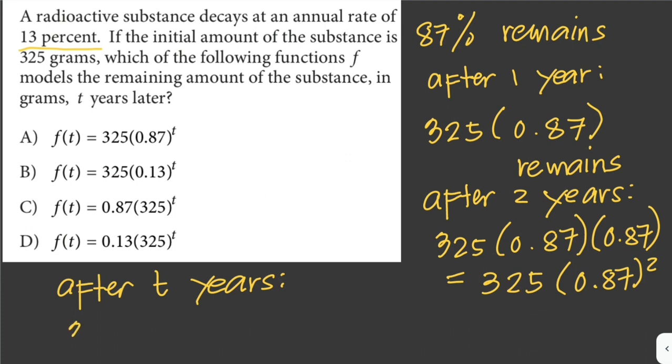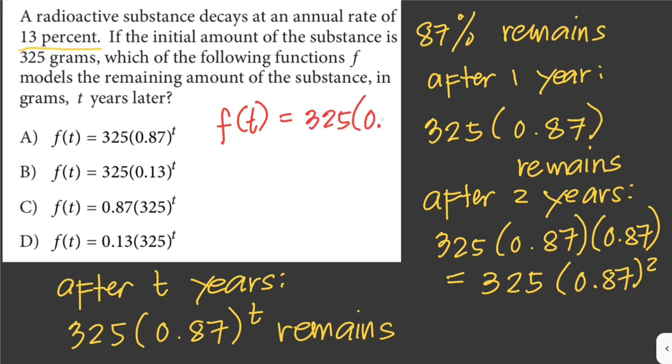After t years, there would be 325 times 0.87 to the power of t grams of substance remains. So we can write our function as f(t) = 325 times 0.87 to the power of t. So our answer here would be letter A.